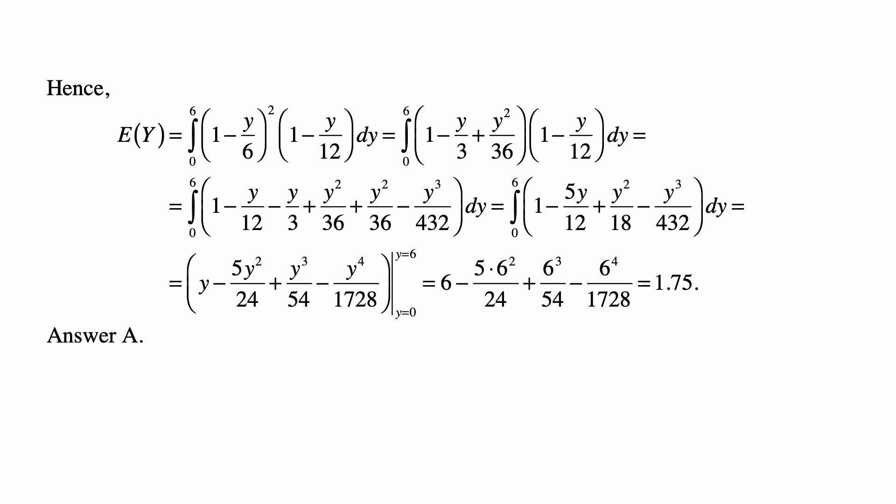We multiply it out, becomes the integral from 0 to 6 of 1 minus y over 12 minus y over 3 plus y squared over 36 plus y squared over 36 minus y cubed over 432. That's the integral from 0 to 6 of 1 minus 5y over 12 plus y squared over 18 minus y cubed over 432. That's then equal to y minus 5y squared over 24 plus y cubed over 54 minus y to the fourth over 1728 evaluated from 0 to 6, which becomes 6 minus 5 times 6 squared over 24 plus 6 cubed over 54 minus 6 to the fourth over 1728. And that's equal to 1.75, which is answer A.